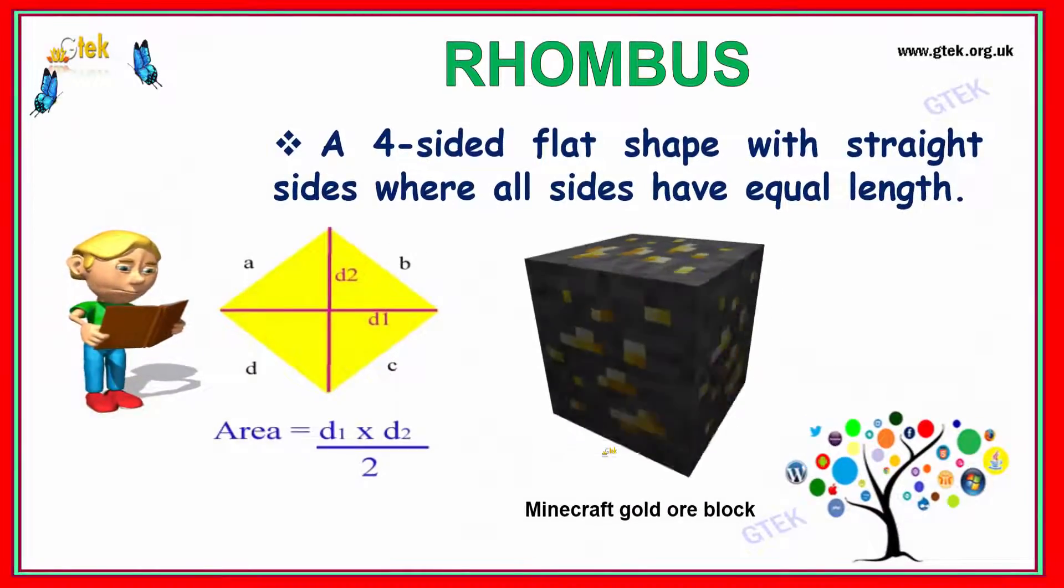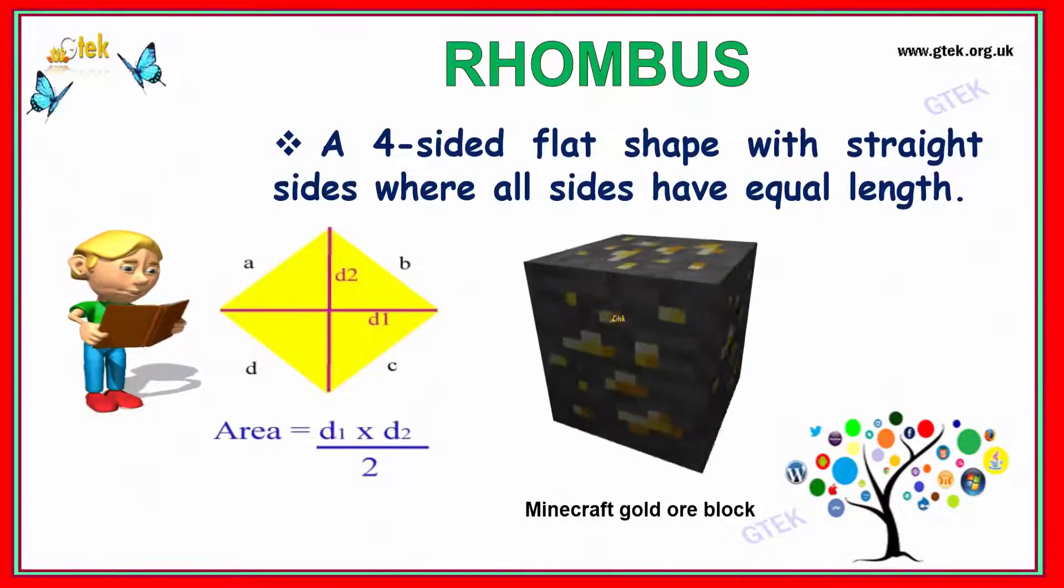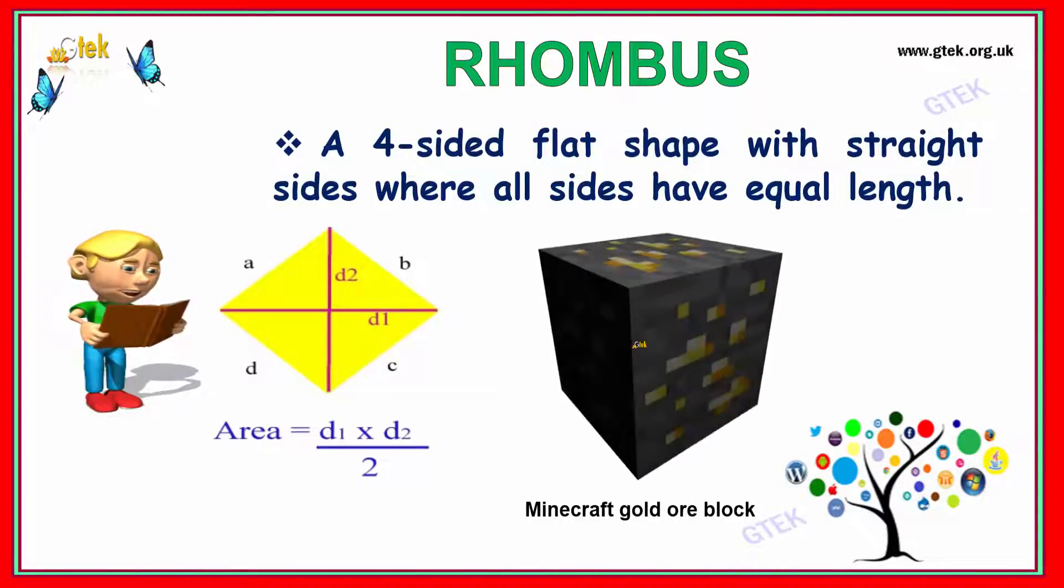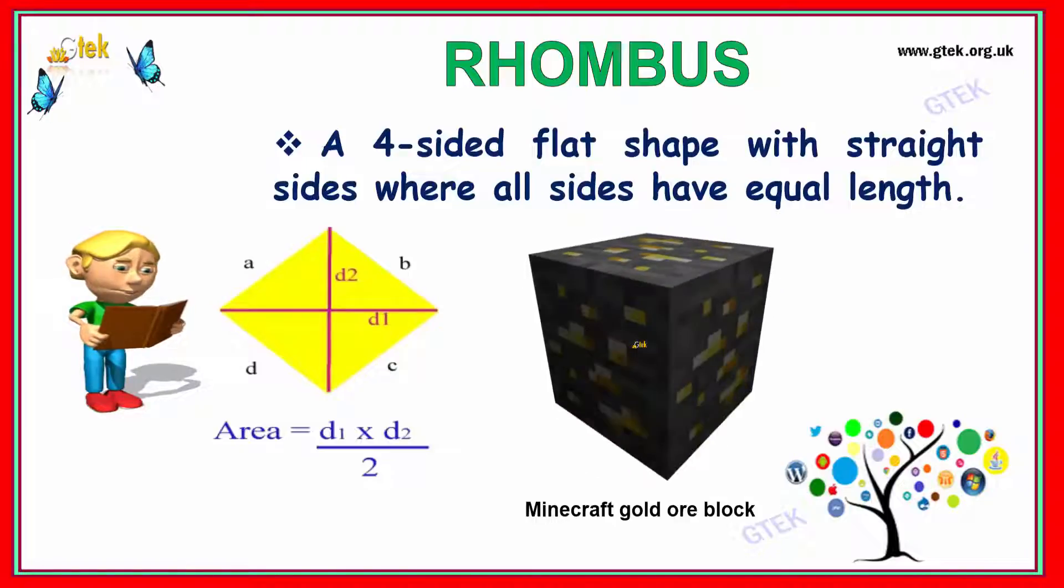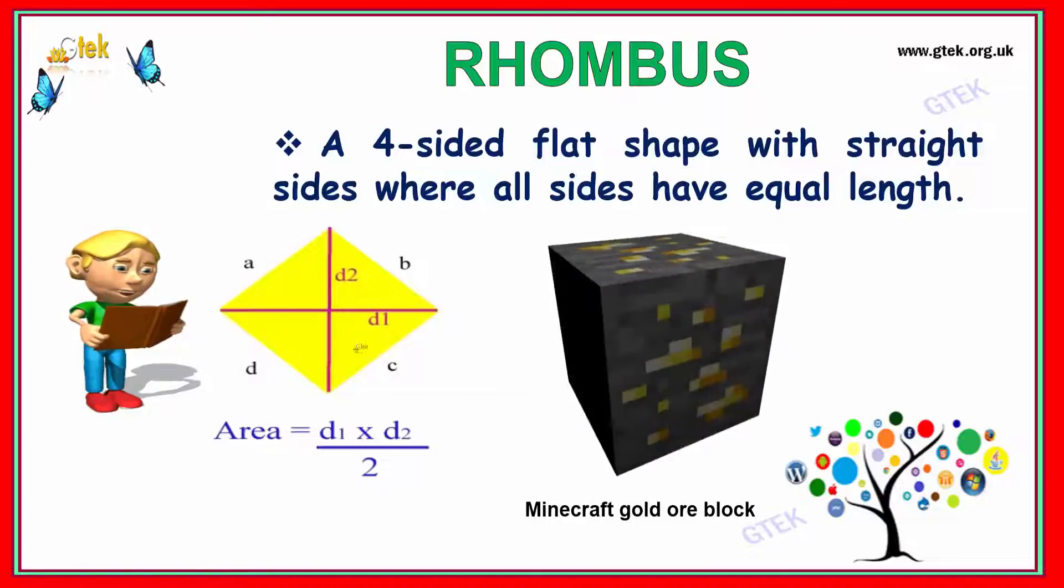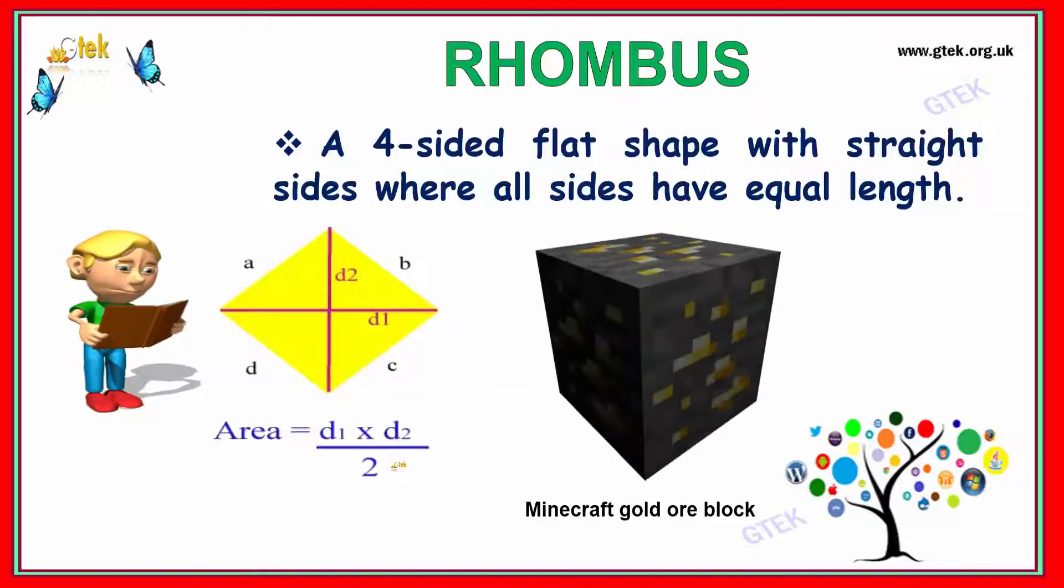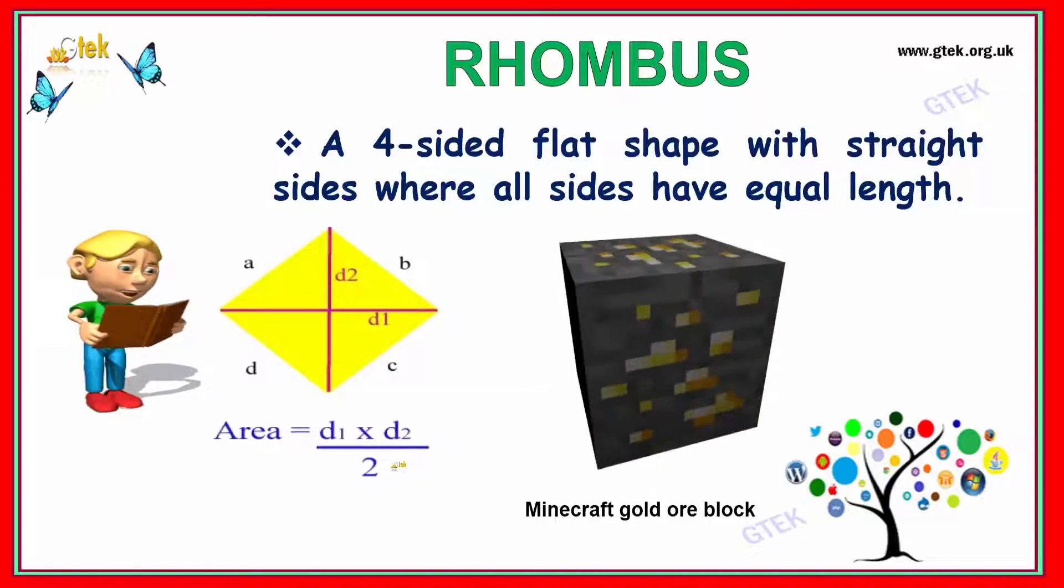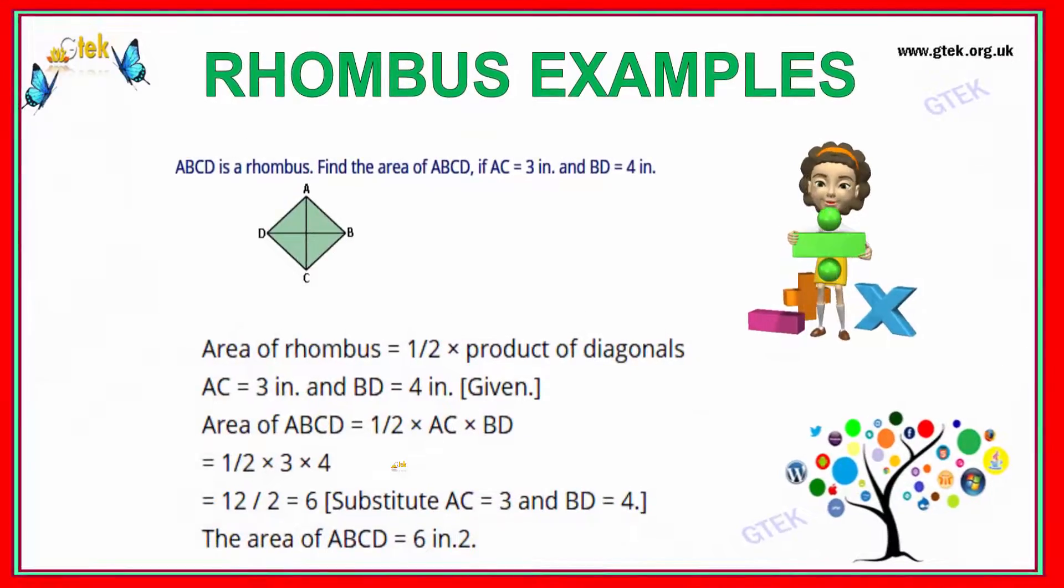Now we will talk about rhombus. Rhombus is a 4-sided flat shape with straight sides where all sides have equal length. The area is diameter D1 times D2 divided by 2. Here's a typical example of a rhombus: area of ABCD where AC equals 3 inches and BD equals 4 inches.